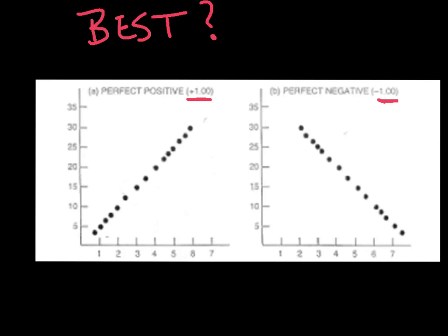In other words, on the first one here on the left, we have a positive trend. As the X values increase, so do the Y values. They increase at the same rate here. And so since all those dots line up perfectly, we say the correlation coefficient is positive 1.